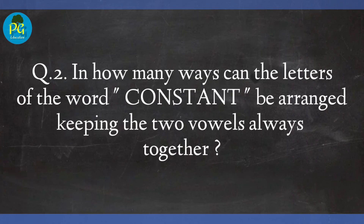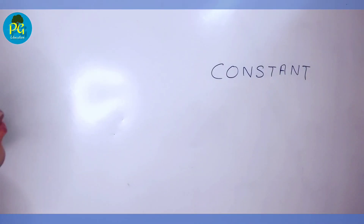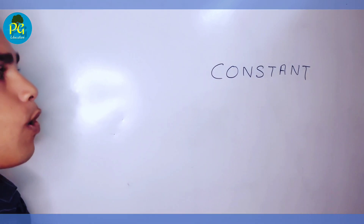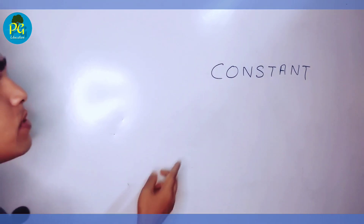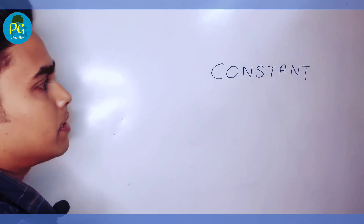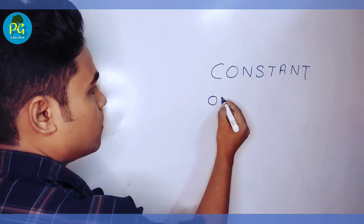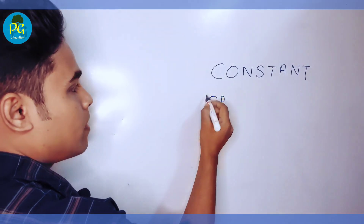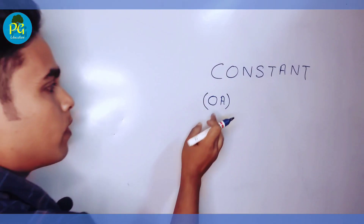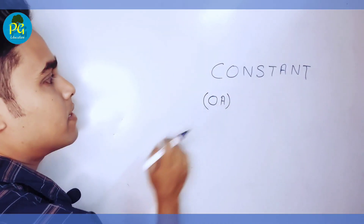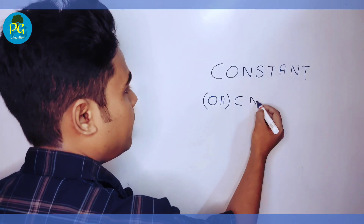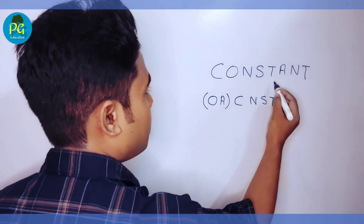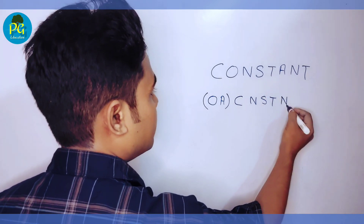Question number 2: In how many ways can the letters of the word CONSTANT be arranged keeping the two vowels always together? The given word is CONSTANT, and we need to find the number of ways when the two vowels always come together. How many vowels are there? There are two vowels: O and A. Excluding these two vowels, the remaining letters are C, N, S, T, N, T — that is 7 letters in total.